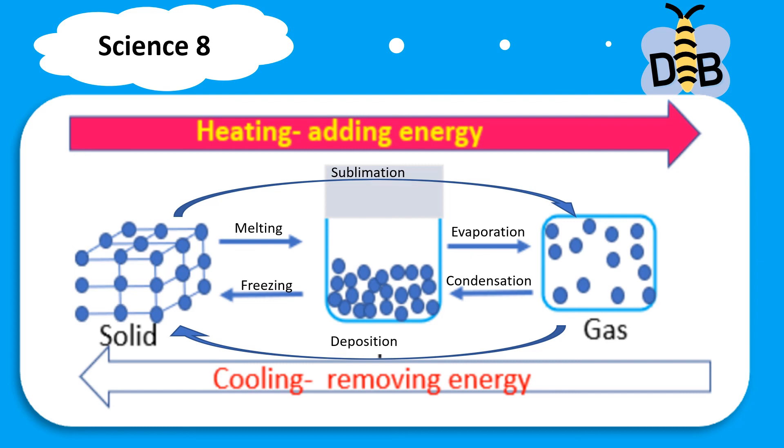The second group of phase changes are the phase changes that occur when heat is removed. These are freezing, condensation, and deposition. These changes require cooling or removing heat that cause or make the molecules of matter move slower and closer, forming a very strong bond.